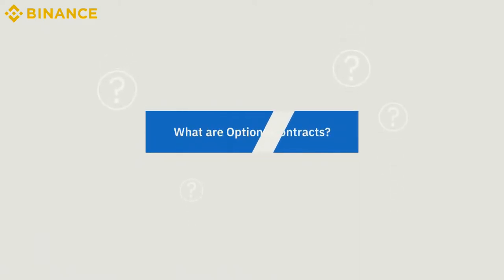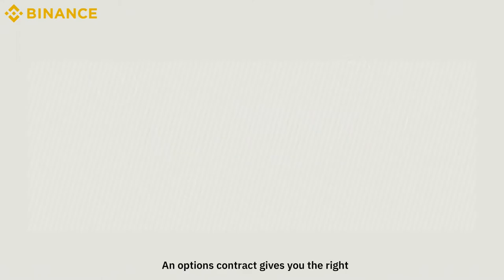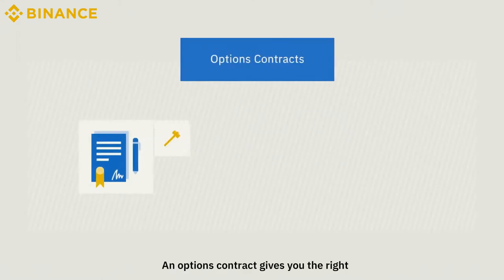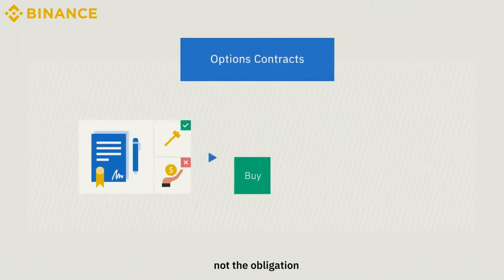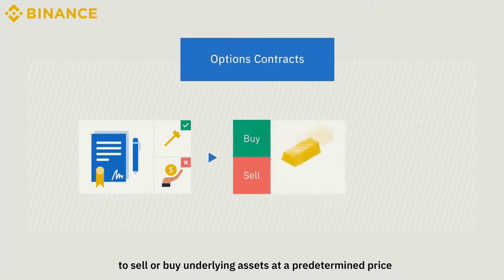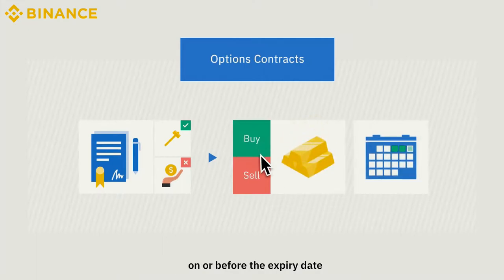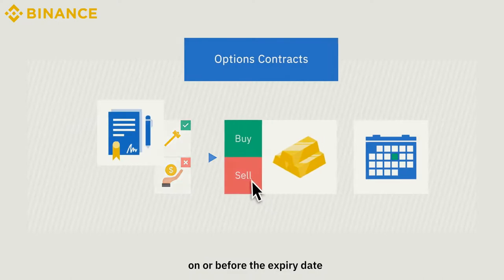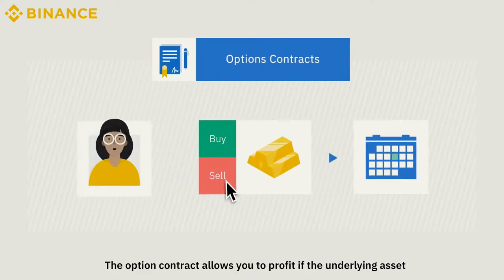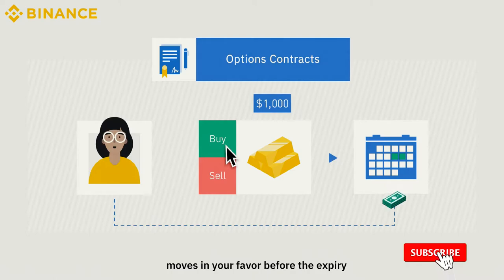What are options contracts? An options contract gives you the right, not the obligation, to sell or buy underlying assets at a predetermined price on or before the expiry date. The option contract allows you to profit if the underlying asset moves in your favor before the expiry date.